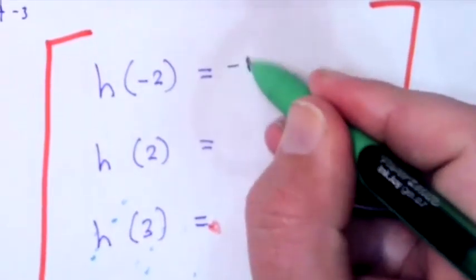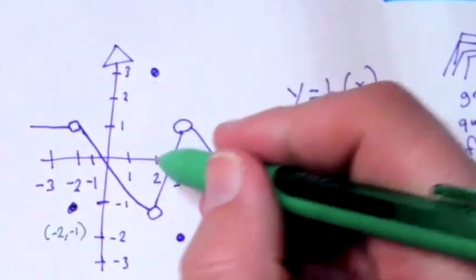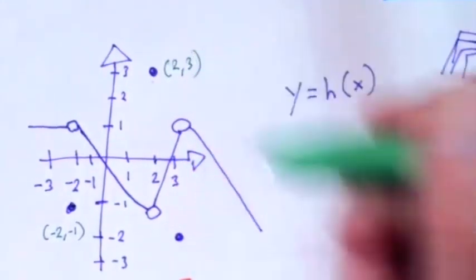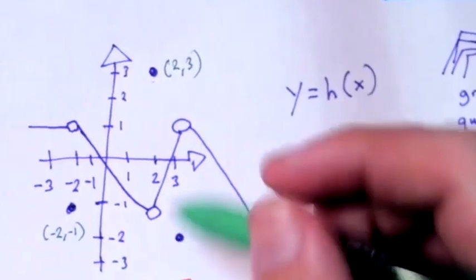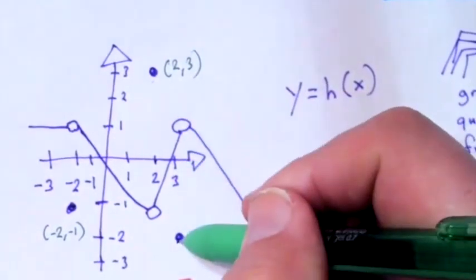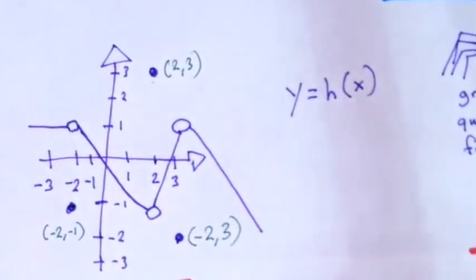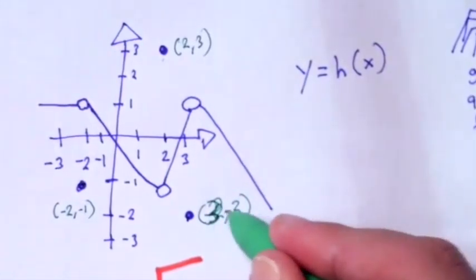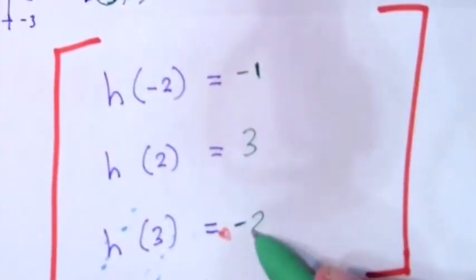I can look here at x equals 2. There is an open circle and a closed circle. At x equals 2, the closed circle is at the point 2, 3. So the h of 2 value is equal to 3. Finally, at h of 3, there is an open circle and a closed circle. I always look to the closed circle for the function value. The closed circle is at negative 2, 3. I am sorry, I wrote that backwards. The closed circle is at 3, negative 2. So h of 3 is equal to negative 2.